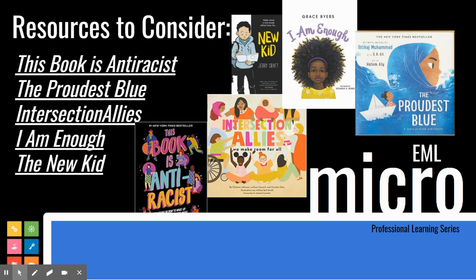Some of the resources that you could consider using are listed here on this slide. One of these books is called This Book is Anti-Racist. There's an activity where students actually document all the aspects of their identity. Feel free to take a look at that one to get you started.